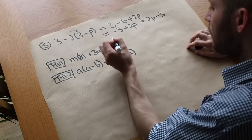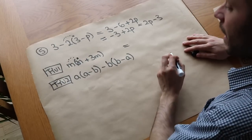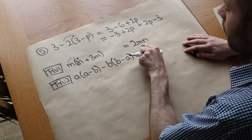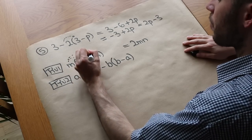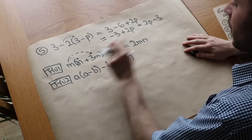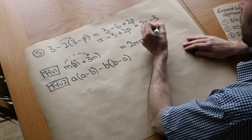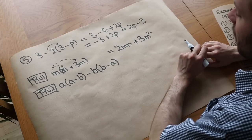Now let's do these quickly. We have m times 2n. That is 2mn. The number always comes first, and then the variables you order alphabetically. And then we've got m times 3m. Well, we put the number first. We've just got 3 plus 3. And then we've got the m times the m, which is m squared. So you should have 2mn plus 3m squared.